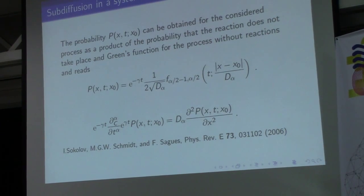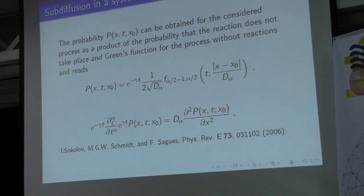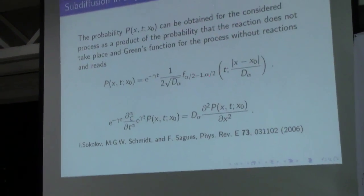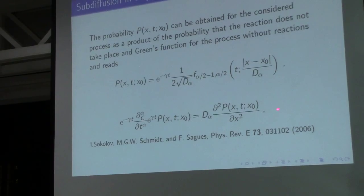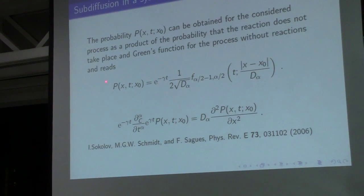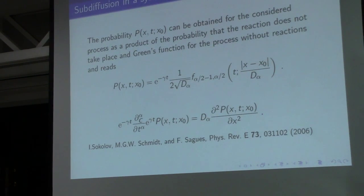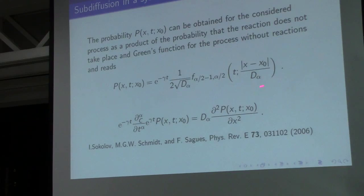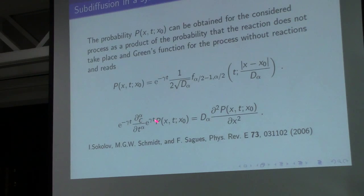The first case corresponds to this reaction. For this reaction, P equals one. The probability distribution is as follows, and the equation is this. This probability and equation were previously derived by Igor Sokov and Orr et al., using a different method.